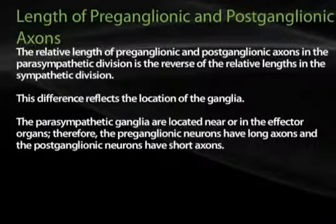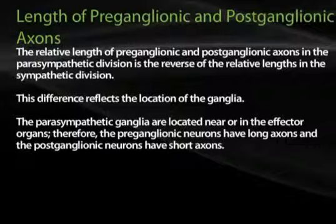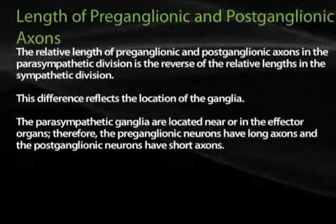The relative length of preganglionic and postganglionic axons in the parasympathetic division is the reverse of the relative lengths in the sympathetic division. This difference reflects the location of the ganglia. The parasympathetic ganglia are located near or in the effector organs; therefore, the preganglionic neurons have long axons and the postganglionic neurons have short axons.